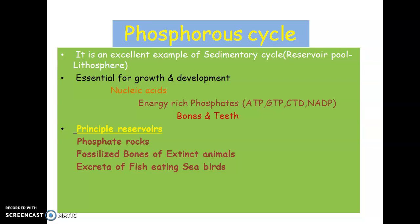In the case of a gaseous cycle, the reservoir pool consists of atmospheric gases like carbon, nitrogen, and oxygen. While in the case of a sedimentary cycle, the reservoir pool will be sediments. So phosphorus is an excellent example of a sedimentary cycle.